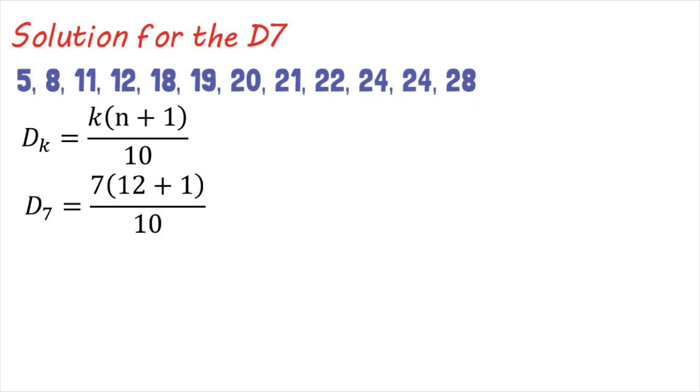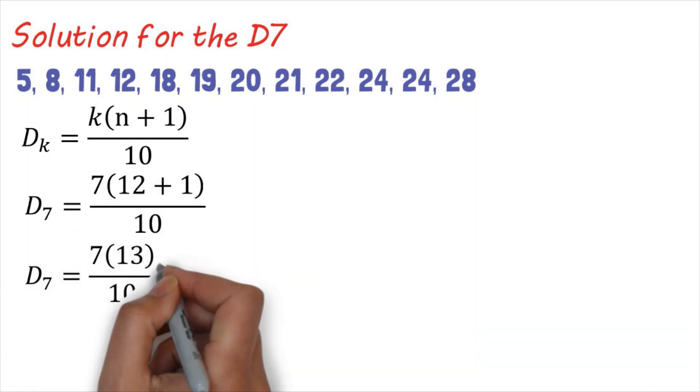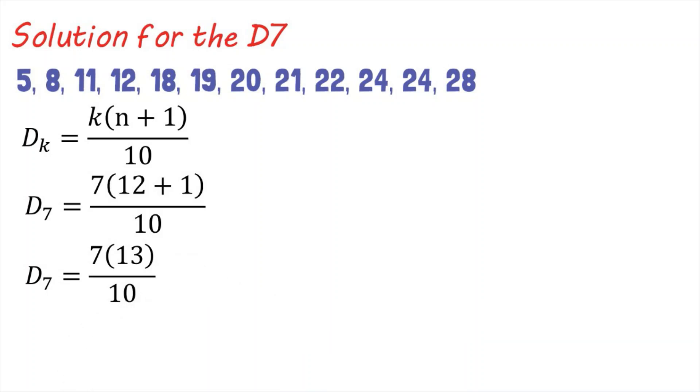12 plus 1 equals 13, so we have D sub 7 equals 7 times 13 divided by 10. 7 times 13 equals 91 divided by 10 which equals 9.1. Next, we'll find the difference between the two values where D sub 7 is situated.